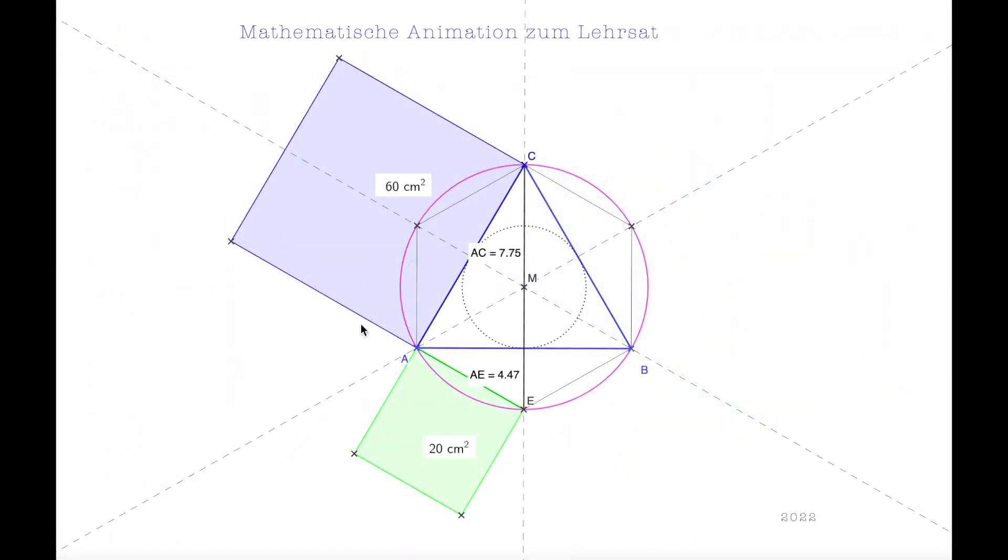Ich möchte doch noch einige Ergänzungen hinzufügen. Die Dreieckseite vom gleichseitigen Dreieck ist 7,75cm. Das Quadrat über der Seite 60 Quadratzentimeter. Es ist natürlich immer klar, dass es hier gerundet ist und dann stimmt das nicht ganz genau. Hier haben wir den Radius vom Umkreis mit 4,47cm und das gibt an Flächeninhalt R² mit 20 Quadratzentimeter. Man sieht, auch bei dieser Einstellung ist die Fläche über der Seite des Dreiecks dreimal so groß wie die Fläche über dem Radius des Umkreises.